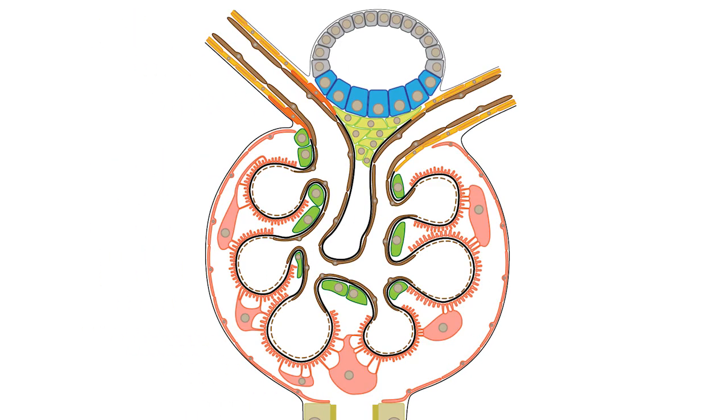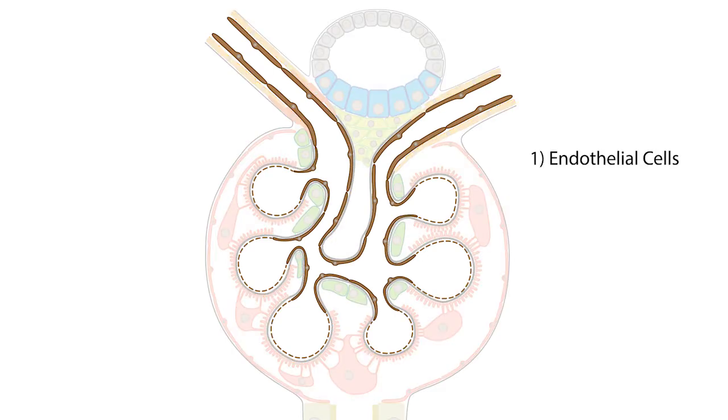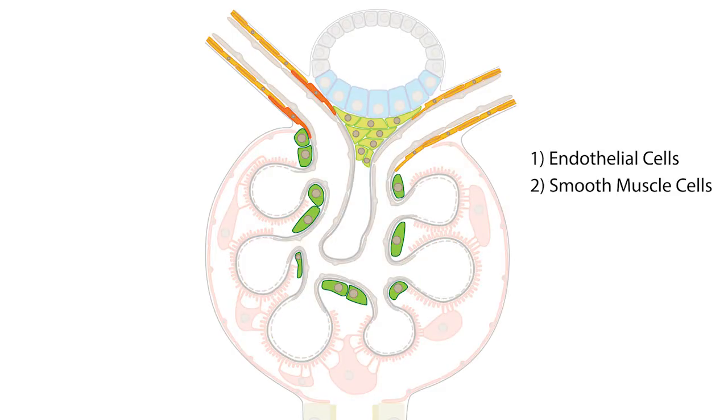To start with, the glomerulus is composed of three different cell types: endothelial, smooth muscle, and epithelial cells.